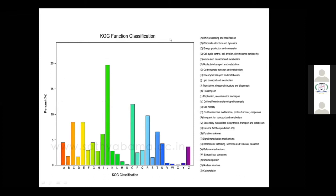Here we have another classification — KOG functional classification. In this classification, apart from the number of genes involved, we see the percentage of genes in each functional category. We look at the end result functions from the gene or proteins expressed. For example, we saw in the previous slides genes involved in biological transcription, translation, replication, cell motility, and virus-related information. RNA processing and modification, as well as unnamed proteins, are also categorized.